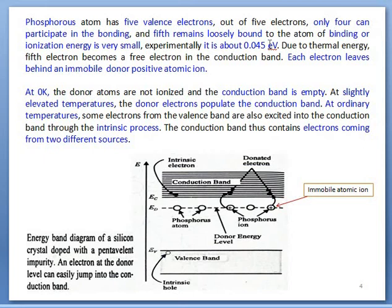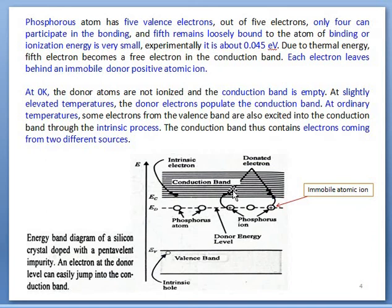This process can also be understood via an energy band diagram. Here is the energy band diagram — this is the valence band, this is the conduction band. Since by providing a small amount of energy a 5th electron can easily be released to the conduction band, all those pentavalent atoms will be located near the bottom of the conduction band, EC. Since these atoms have the ability to donate electrons, this level is called the donor level. After releasing an electron, the donor atom is transformed into a positive atomic ion, which is immobile.